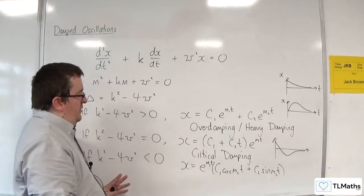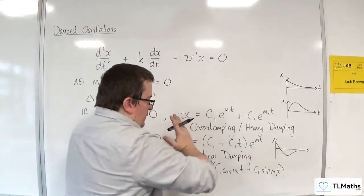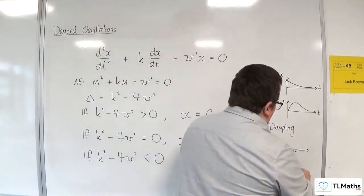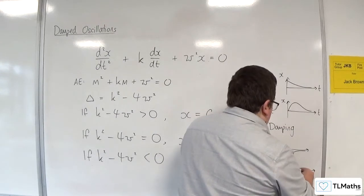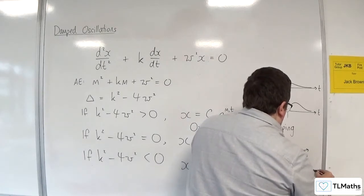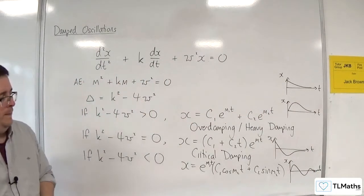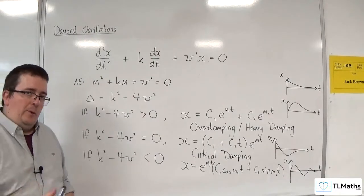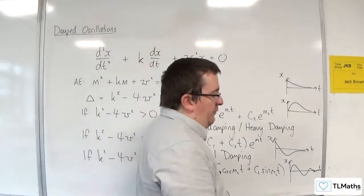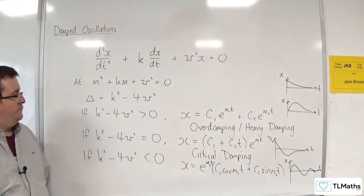And then what you find is that you have this situation where it kind of rocks back and forwards and it gets slower and slower and slower but it keeps on rocking back and forwards. So you get this situation visually where it's doing something like this, where it's getting closer and closer and closer to that t-axis. So it kind of still has that oscillating nature but it's getting closer and closer to the t-axis as the resistance force slows it down essentially.